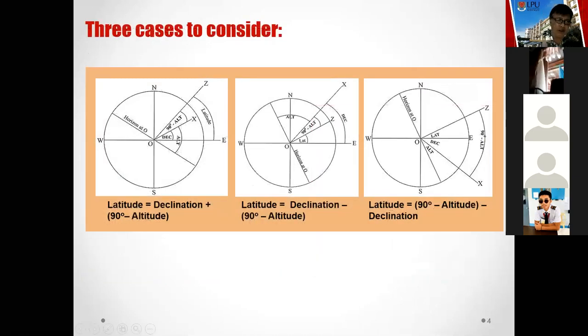There are three cases to consider with different samples. In case number one, declination plus 90 minus the altitude. Notice that the latitude is greater than the declination. This is the body's position. From the horizon to X is the altitude. This represents the declination.